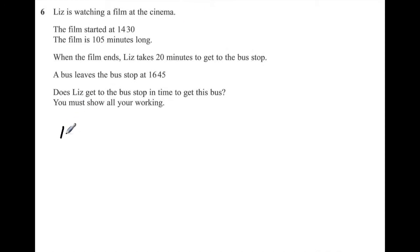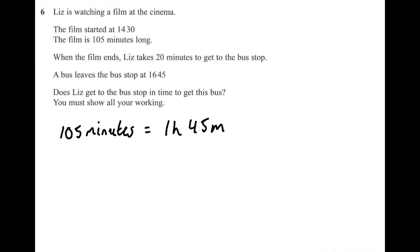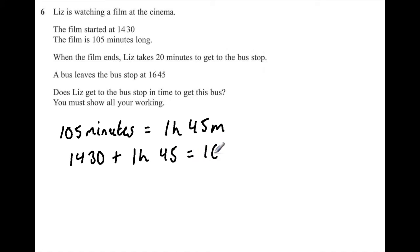First, I'm going to convert 105 minutes into hours. 105 minutes is equal to 1 hour and 45 minutes. I'm then going to add 1 hour and 45 minutes to the start time of 14:30 hours to see when the film ends. 14:30 plus 1 hour 45 minutes equals 16:15 hours. So the film ends at 16:15 hours.